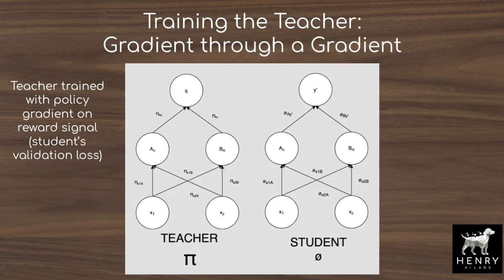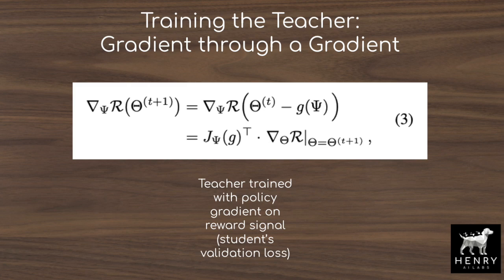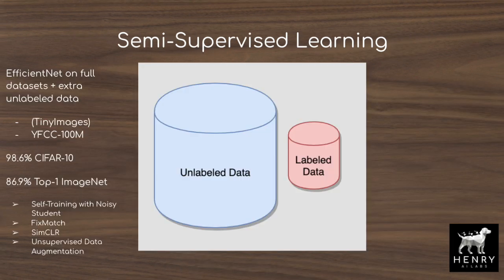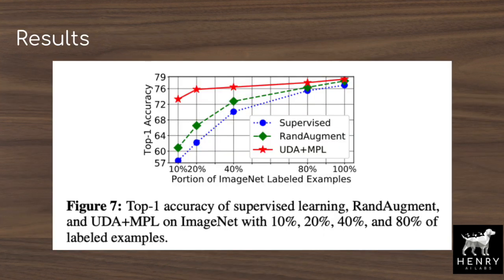This is done by training the classification model, or student network, on pseudo labels produced by a teacher network. The teacher network is then updated to maximize the classification model's accuracy on the validation set after it trains and updates itself through backpropagation on the pseudo labels. This involves an interesting gradient through a gradient operation. MetaPseudoLabels achieves 86.9% top-one ImageNet accuracy through semi-supervised learning with additional data, and also impressive performance in limited data settings.